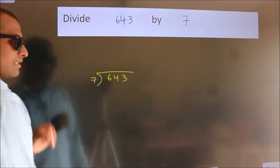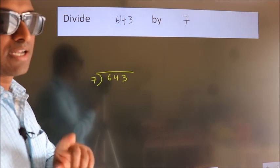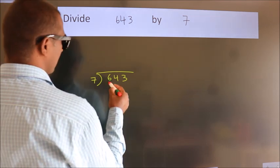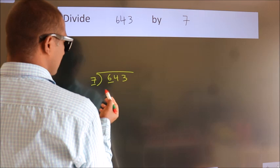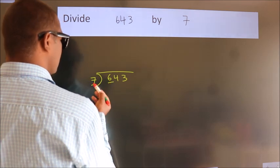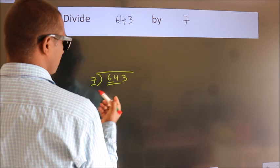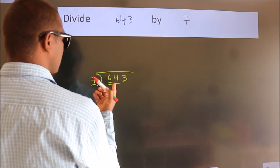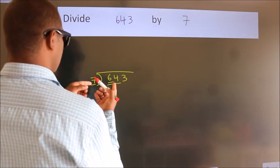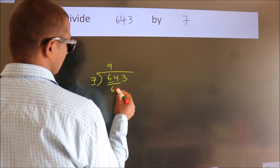This is your step 1. Next, here we have 6, here 7. 6 smaller than 7. So we should take two numbers, 64. A number close to 64 in 7 table is 7 nines, 63.